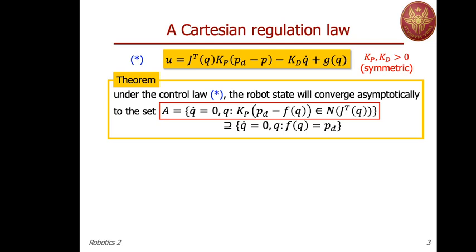This controller is a mixed term: the error is in the Cartesian space at the position level, but the second and third terms are directly joint torques defined in the joint space. Under the action of this controller, the robot states will asymptotically converge to a set A, which is the set of states where the joint velocity is zero, and the set of configurations where the difference between the desired pose and the actual pose, multiplied by the gain Kp, lies in the null space of the Jacobian transpose. This set includes the desired state — zero velocity and the desired end-effector pose.